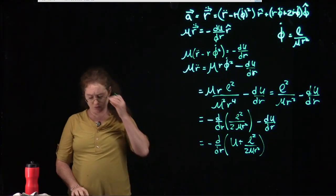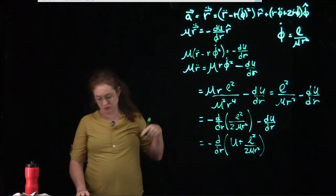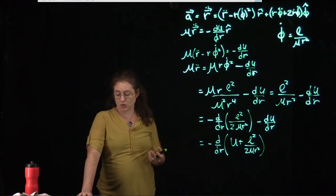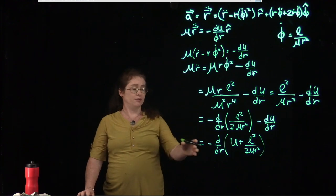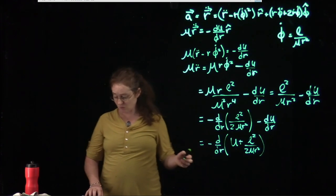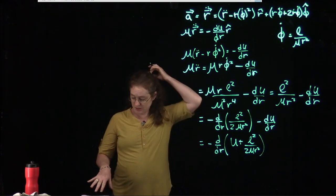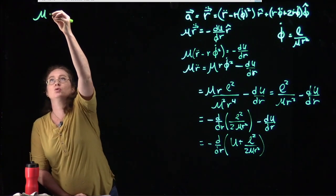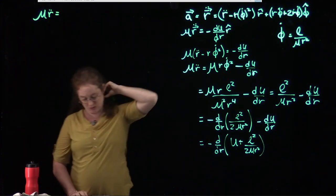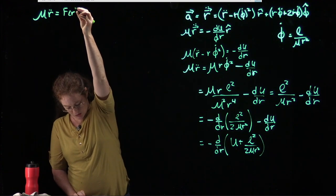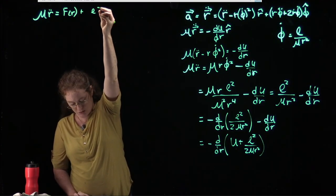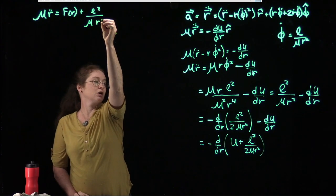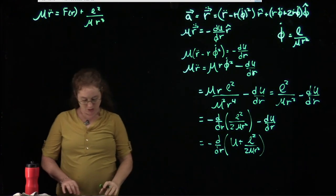This effective potential well has applications to many systems, even those not governed by 1/r² forces, such as the strong nuclear force. Now we want to actually work with the equation of orbit — to figure out what these orbits look like. We'll use our effective force equation: μ·r-double-dot = f(r) + L²/(μ·r³).